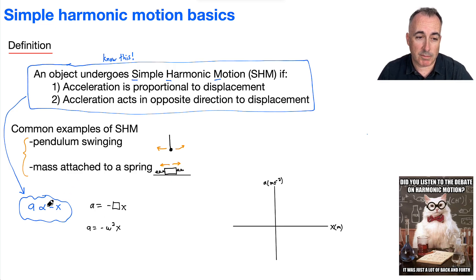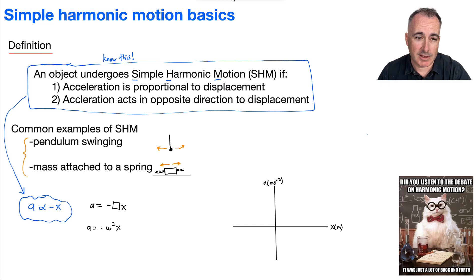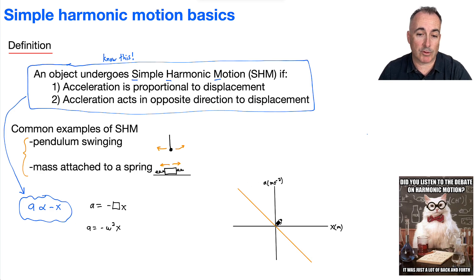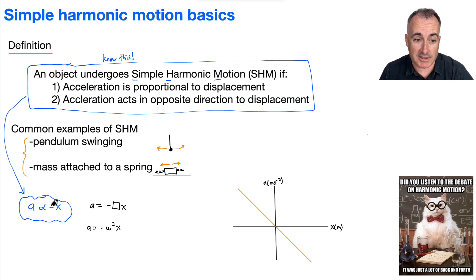What does it mean for something to be proportional? It means it's going to be linear if we put x on the x-axis and acceleration on the y-axis — this is going to be a linear graph. The graph is a straight line passing through the origin with a negative slope. So as you move x to the right by a few units, the acceleration goes down by the same number of units. This is a visual representation of the definition of simple harmonic motion.